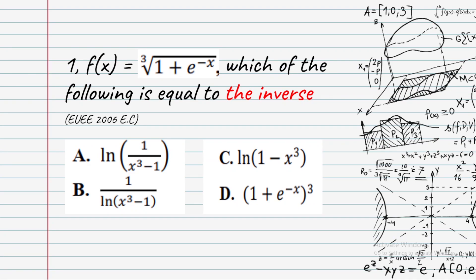Which of the following is equal to the inverse? The options are: e equals ln in the bracket 1 over x cubed minus 1, or 1 over ln in the bracket x cubed minus 1.